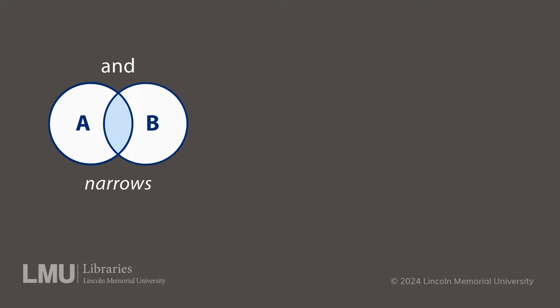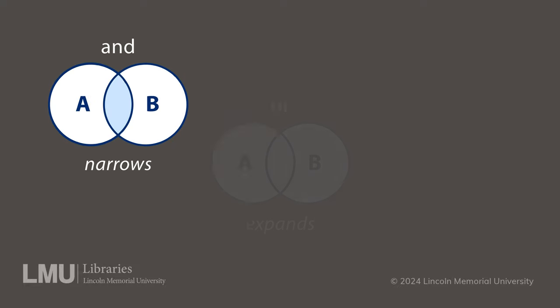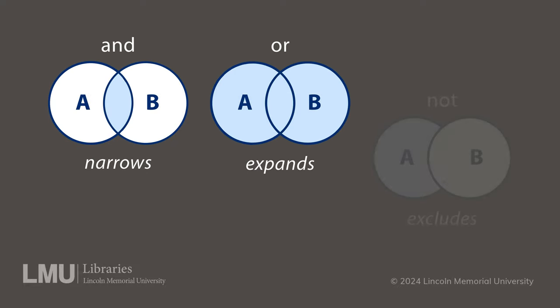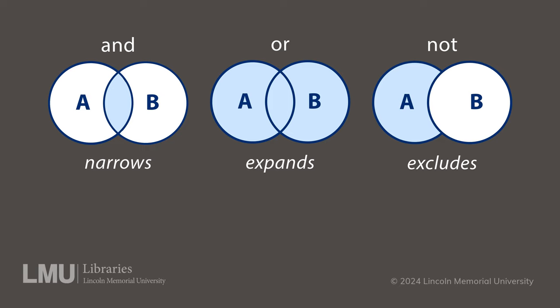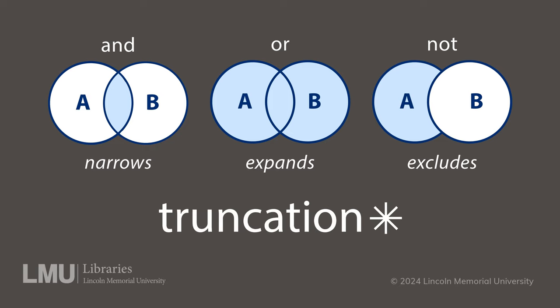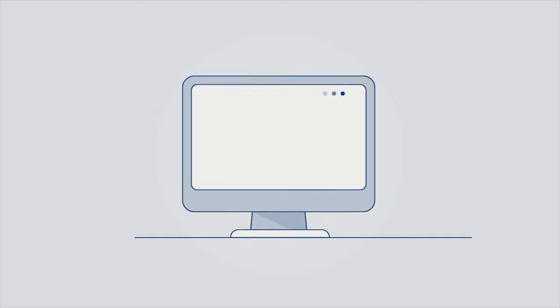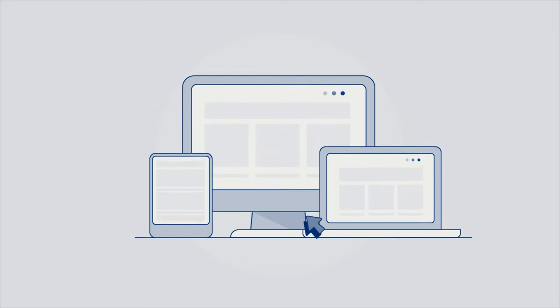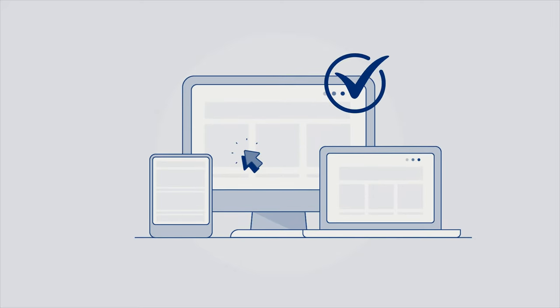So now you're equipped with the power of Boolean Operators and truncation. Use AND to narrow, OR to expand, NOT to exclude, and an asterisk to gather multiple word forms. Together, these tools unlock a world of targeted search results. Give it a try next time you search the library database. With Boolean Operators and Truncation, you'll find the information you need faster than ever.